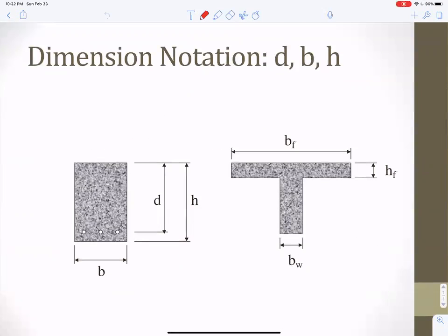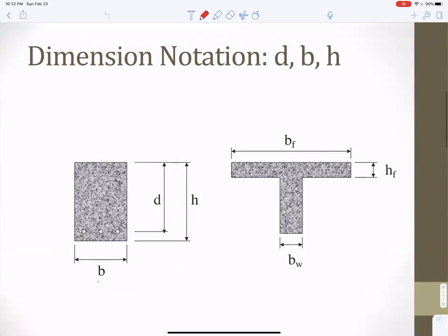When I talk about concrete beams, the width I'll use B, the overall height of the beam will be H, and the structural depth I'll call D. That's the distance from the steel to the extreme compression fiber. Typically, I approximate D as H minus 2.5 inches, and I can explain that later.